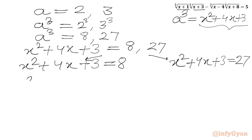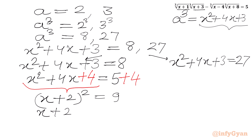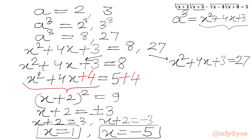Solving the first quadratic x²+4x+3=8: rearrange to x²+4x-5=0. Adding 4 to both sides to complete the square: (x+2)²=9. Taking square roots: x+2 = ±3, giving x=1 or x=-5. We have two real solutions from this equation.